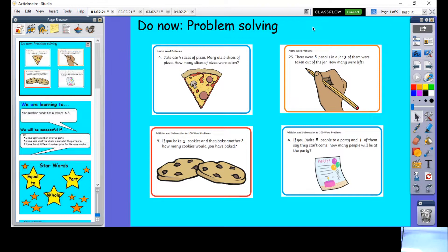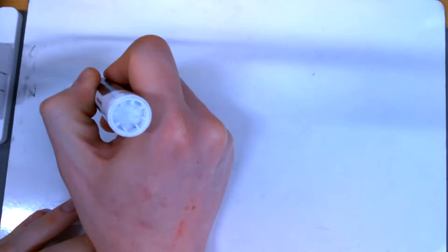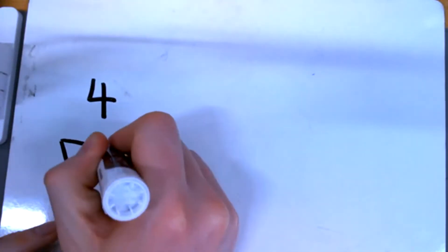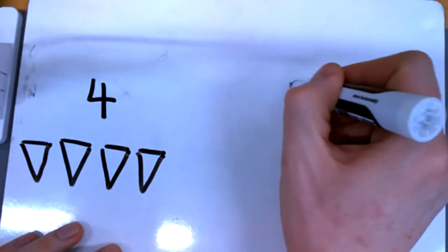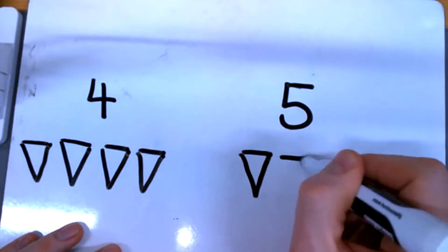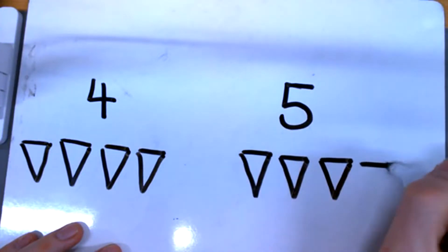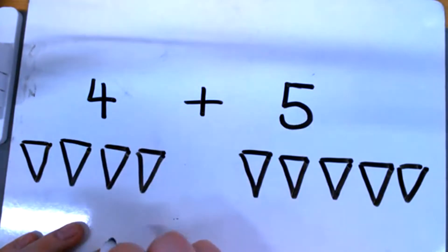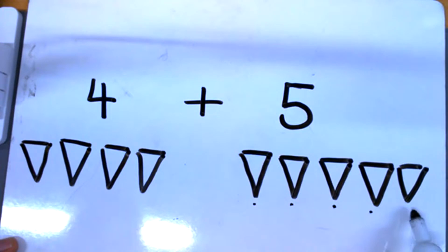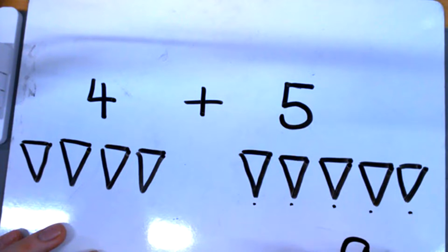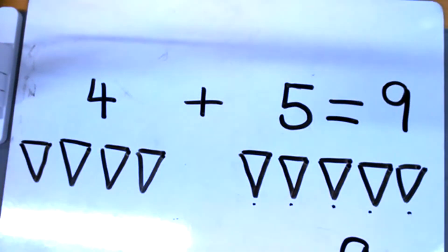Okay boys and girls, let's have a go together. The first one: Jake ate four slices of pizza, Mary ate five slices of pizza — how many slices were eaten? Jake ate four slices, Mary ate five. Let's count on: four, five, six, seven, eight, nine. So Jake and Mary ate nine slices of pizza altogether. Four plus five makes nine — well done!